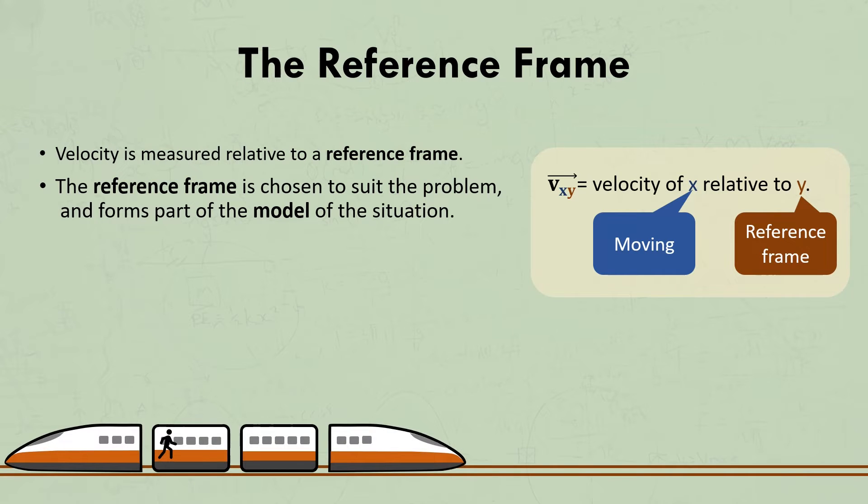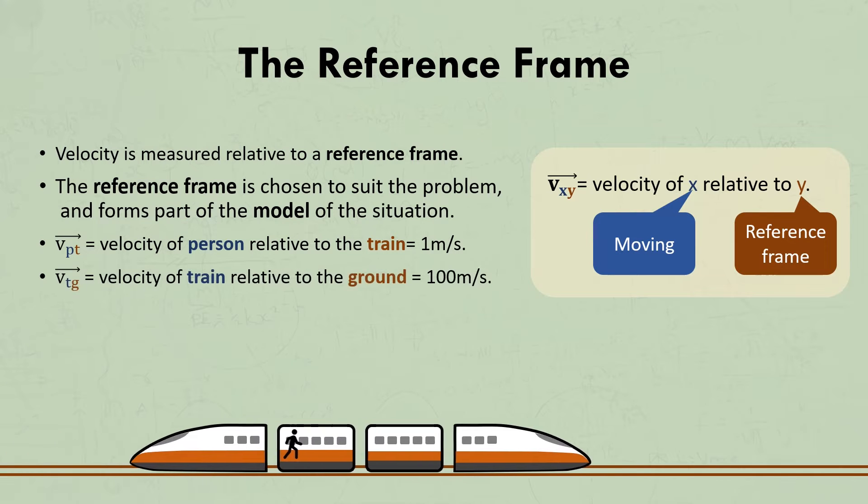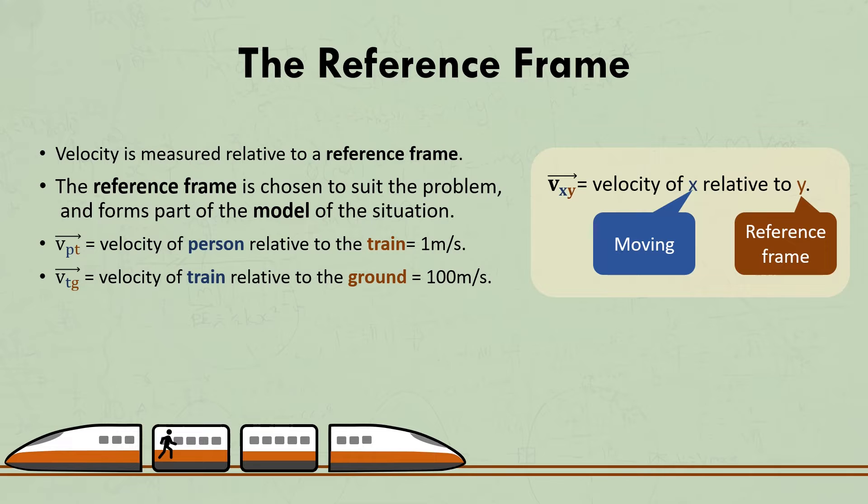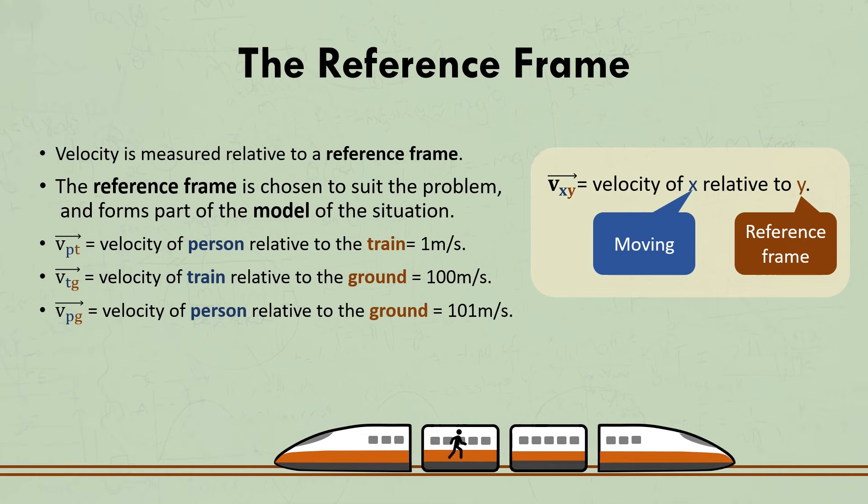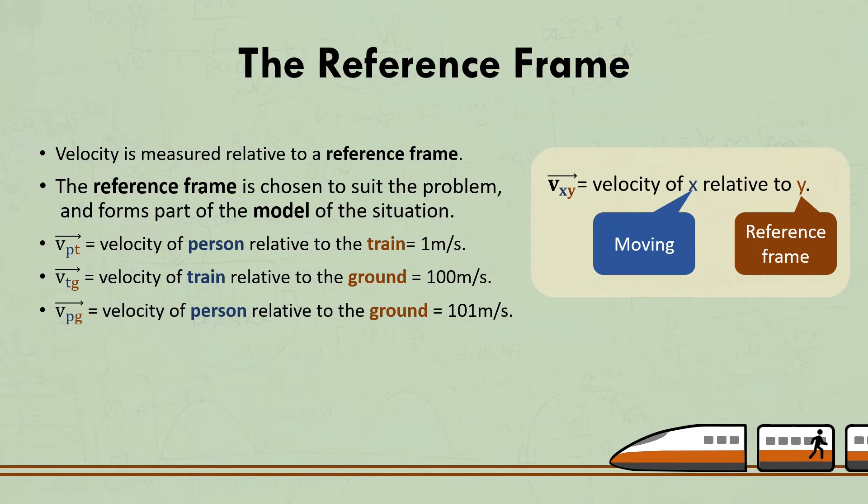Let's look at the classic train example. If a person walks along the floor of a train at 1 metre per second, while the train is moving at 100 metres per second relative to the ground, then the velocity of the person relative to the ground is obviously 101 metres per second. That's the speed that a person would appear to be moving from a security camera mounted on the tracks, since it's connected to the ground and thus part of the ground's reference frame.